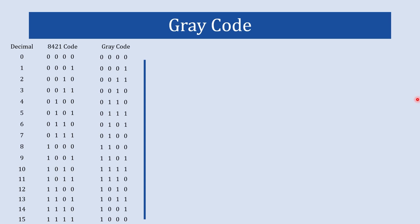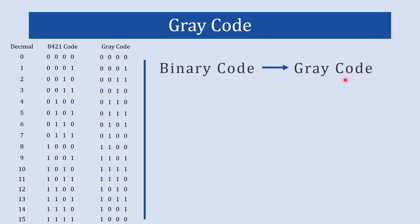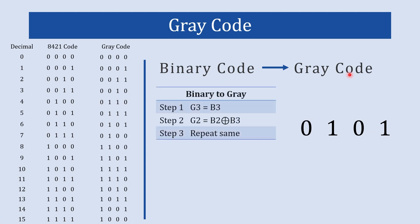In this section we are going to understand how to convert binary code into gray code. To understand this, let us take an example: the binary number 0101. Let us see how to convert this binary into gray code — it is a simple few-step process.